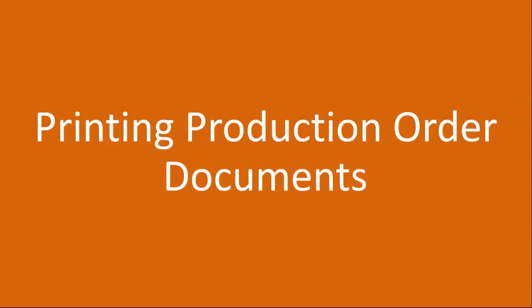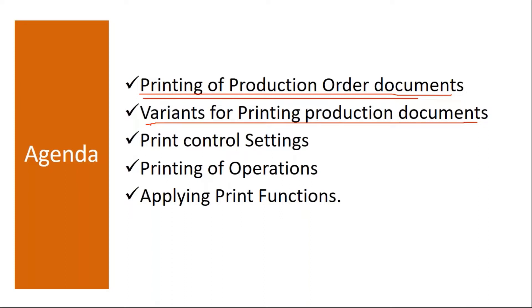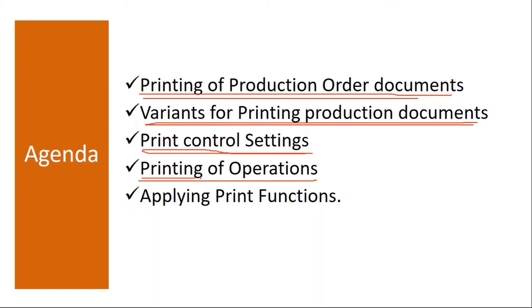We'll be studying our next topic: printing production order documents. The topics we are going to cover include printing of production order documents, what printing is, what kind of documents will be printed, at what point of time they will print the documents, variants for printing production documents, the different methods and modes for printing the production order, the print control settings required, printing of operations, and applying print functions.